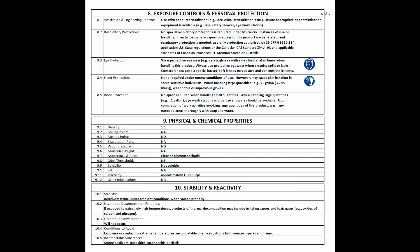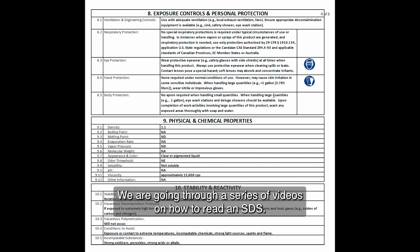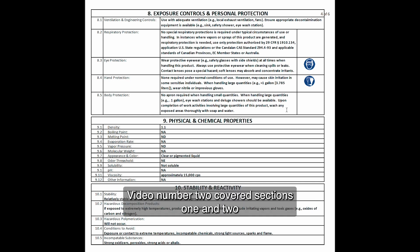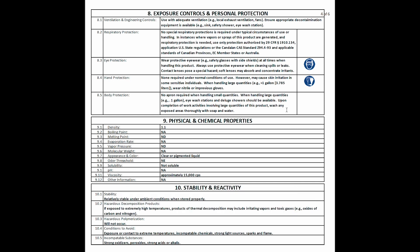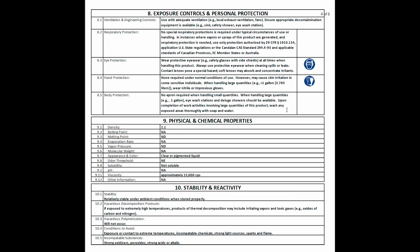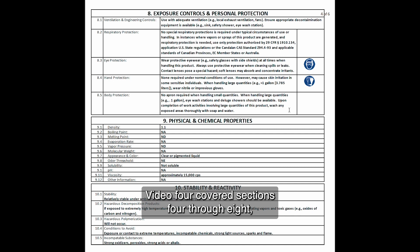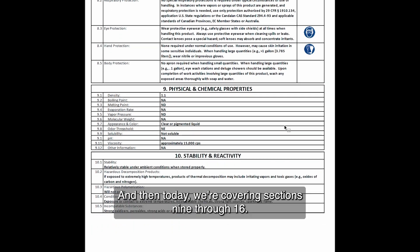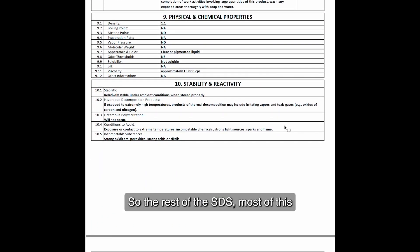Jim McConnell coming to you from Redmond, Oregon. We are going through a series of videos on how to read an SDS. Today we are in video number five. The previous four videos covered: video one — the entire SDS overview; video two — sections one and two; video three — section three, the ingredient area; video four — sections four through eight, covering personal protection, fire safety, and exposure. Today we're covering sections nine through sixteen, the rest of the SDS.